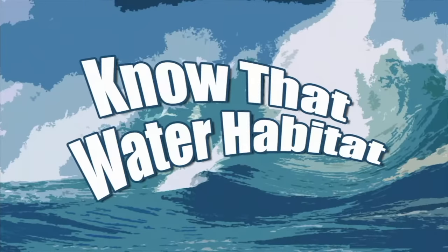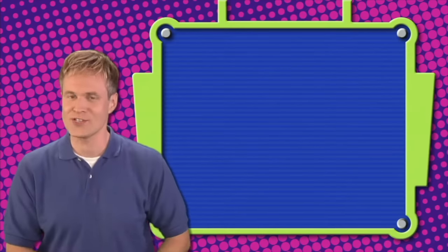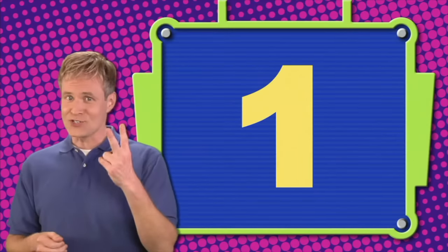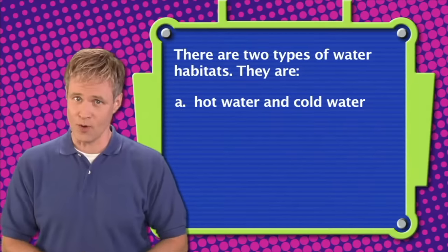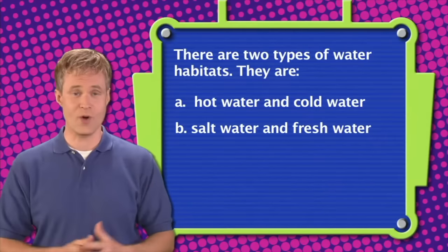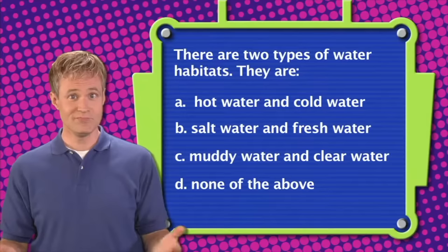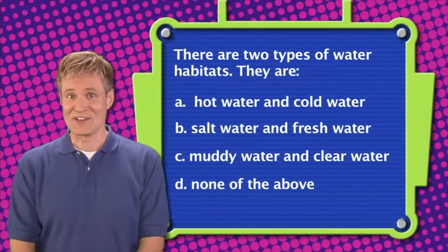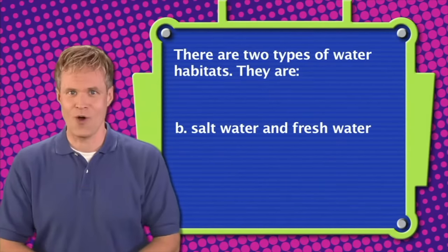Now it's time to play that wet and wild, but never splashy trivia game, Know That Water Habitat. There are two types of water habitats. They are: A. Hot water and cold water. B. Salt water and fresh water. C. Muddy water and clear water. Or D. None of the above. The correct answer is B: salt water and fresh water.